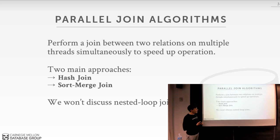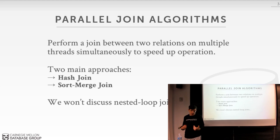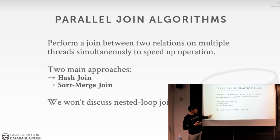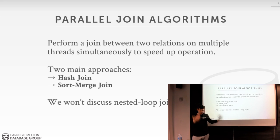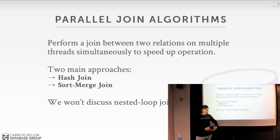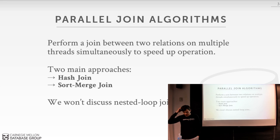The two main approaches in any major OLAP system to compute a join in parallel are either the hash join or the sort-merge join algorithm. This lecture covers hash joins; next Monday we'll do sort-merge joins. We're not going to discuss nested loop joins at all — in the intro class we start with nested loop joins because they're the easiest to understand: just two for loops iterating over the outer and inner table.